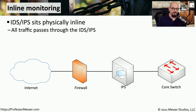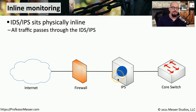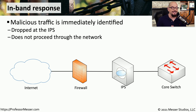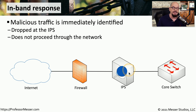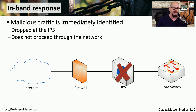A much more common implementation for an IPS is to have it inline on the network, evaluating all traffic that's sent through it. Traffic is sent into the network and received by the IPS, which then examines the traffic, makes sure that nothing inside might be malicious, and if everything looks OK, it sends it on its way. Because the IPS is in band, it's able to block the traffic in real time. As that traffic hits the IPS and it recognizes an attack inside a packet, it would drop that packet, prevent any additional traffic from going through, and nothing would come out the other side to cause any problems inside your network.